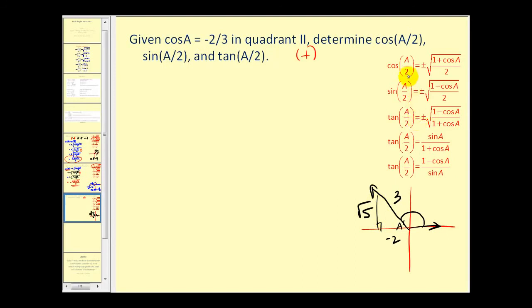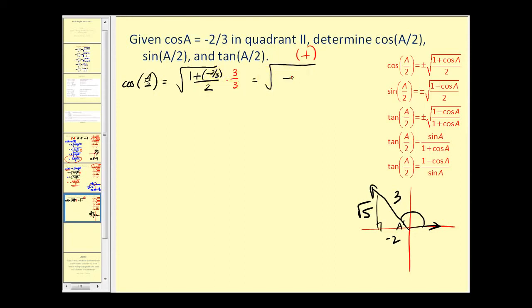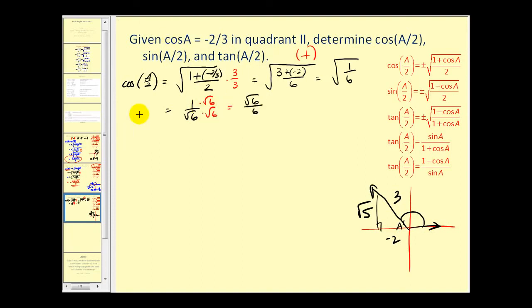Let's find these function values. Cosine of a over two equals the square root of one plus cosine a, which is negative two-thirds, all over two. We already determined all these would be positive. Clearing the fractions, our denominator would be six. The numerator would be three plus negative two, which gives us the square root of one-sixth, which equals one over the square root of six. Rationalizing, we have the square root of six over six.